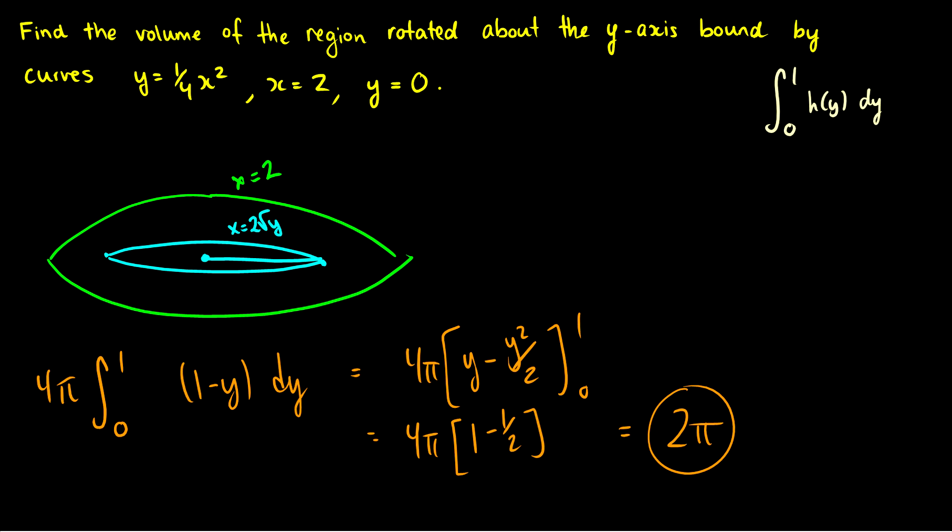Really, all this is: take the area of the outer circle, subtract the area of the inner circle to get the area between the two curves, then take infinitely many slices to get the volume. That's essentially the method for volumes with hollow centers.